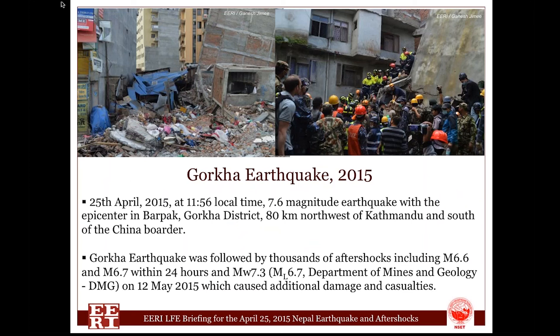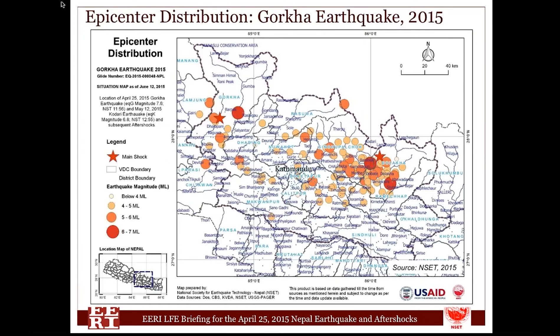The recent Gorkha earthquake of magnitude 7.8 on April 25, 2015 is one of a series of earthquakes in Nepal, followed by thousands of aftershocks, some very strong ones. This shows the epicenters of the main shock and several aftershocks, including the major aftershock of magnitude 7.3 on May 12 in the eastern part of Nepal, in Dolakha district.